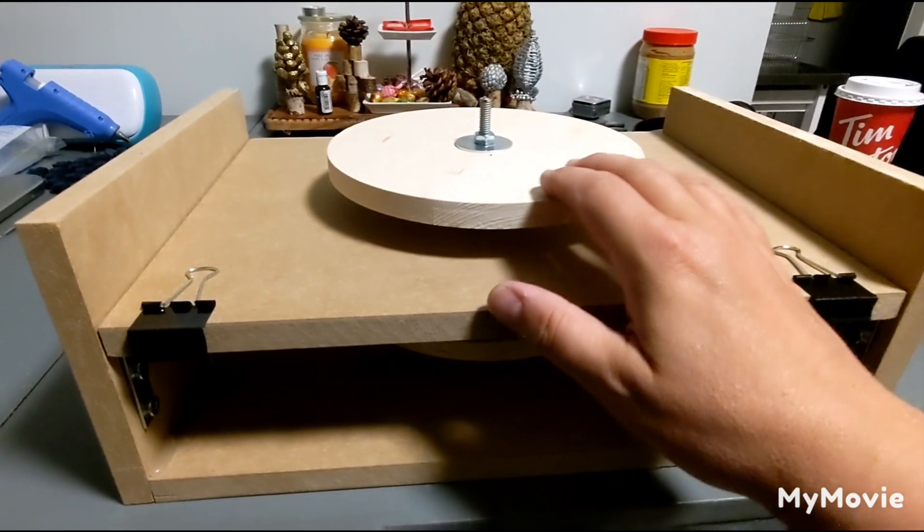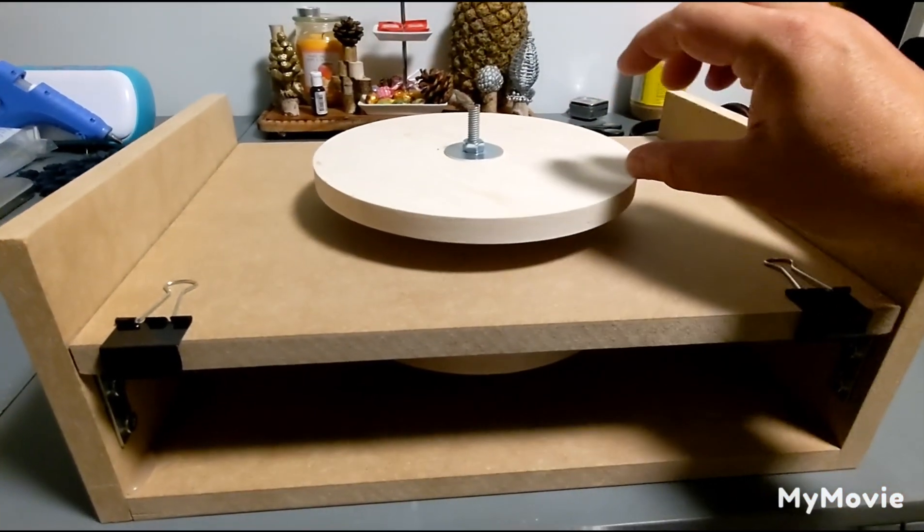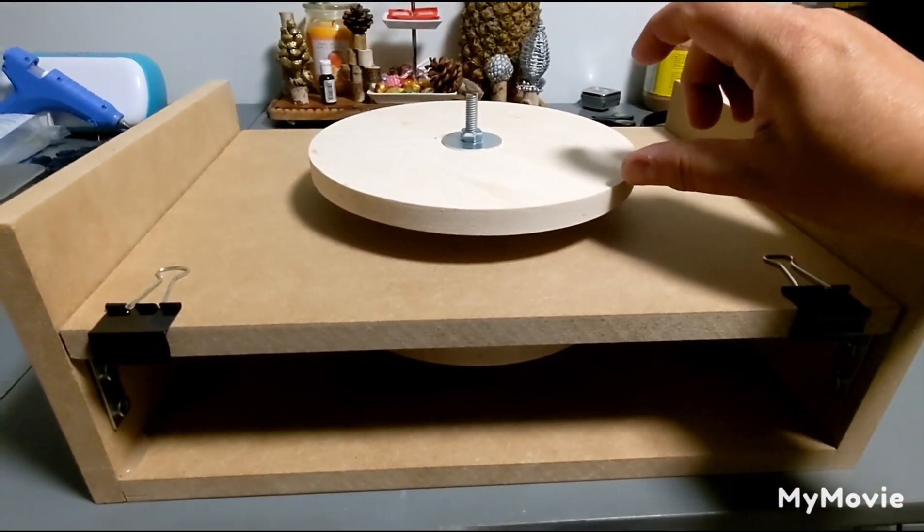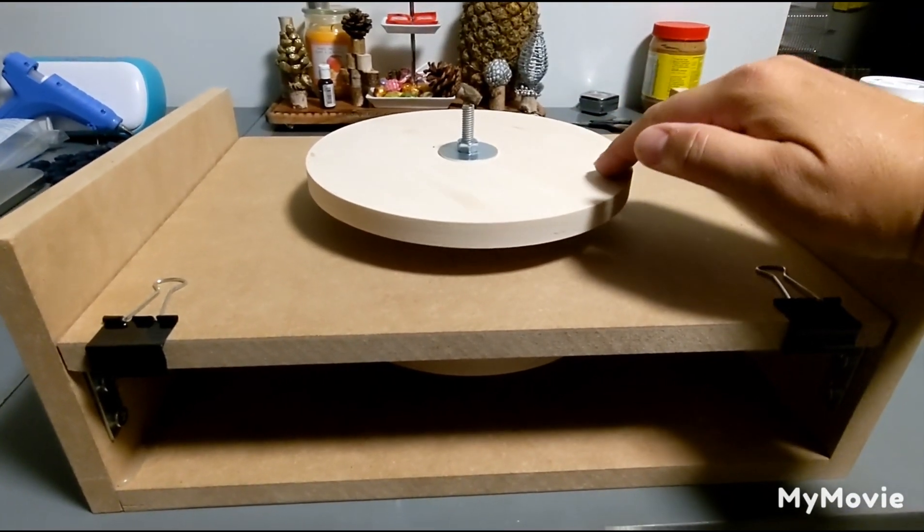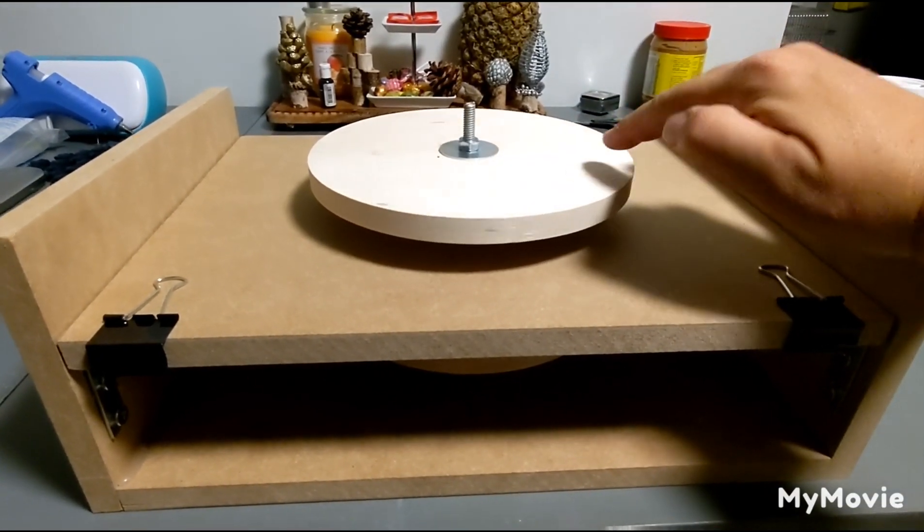And I'm going to have the zero lens, the Bedini coils. They're going to be on top and it's going to be north south, north south, all the way around.